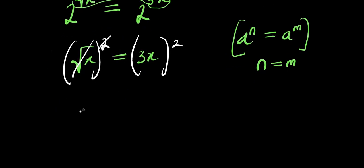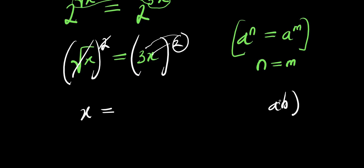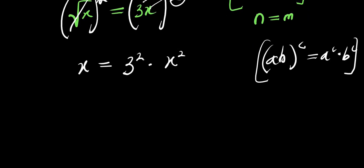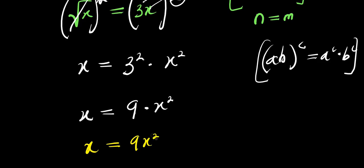Squaring both sides, we get x equals — distributing the square to each term, remember: (a times b) to the power of c equals a to the power c times b to the power c. So this gives us 3 squared times x squared, which means x equals 9x squared.